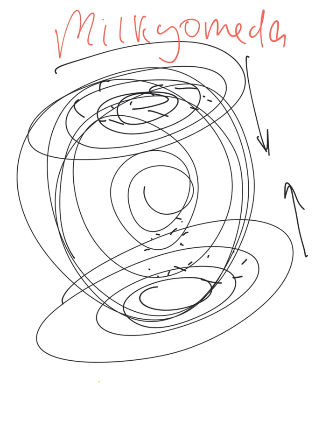At some point, every single star in the Andromeda galaxy and every single star in the Milky Way galaxy is going to mix all together, creating this super galaxy that we don't really have a good name for yet. But some people call it Milkomeda. Somewhere inside there is going to be our sun, and what I discussed in the previous video is what is the chance that our sun is going to collide with one of the other stars, or with really anything else, and be destroyed by that collision.